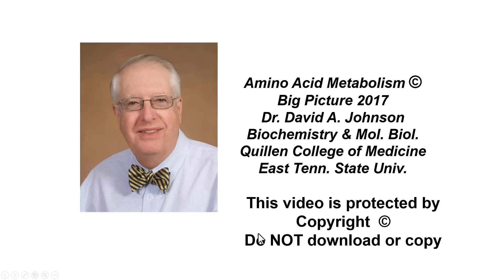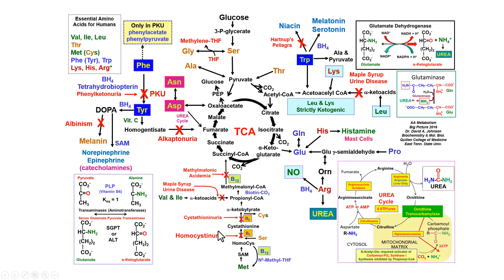This is Dr. David Johnson at Quillen College of Medicine, East Tennessee State University, and this is my amino acid metabolism big picture. It has most of everything you need to know about amino acid metabolism in one simple video. The big picture itself — you'll notice that the TCA cycle intermediate is central to it. A lot of the amino acids feed in and out of there. Diseases are marked in red or with a red X.